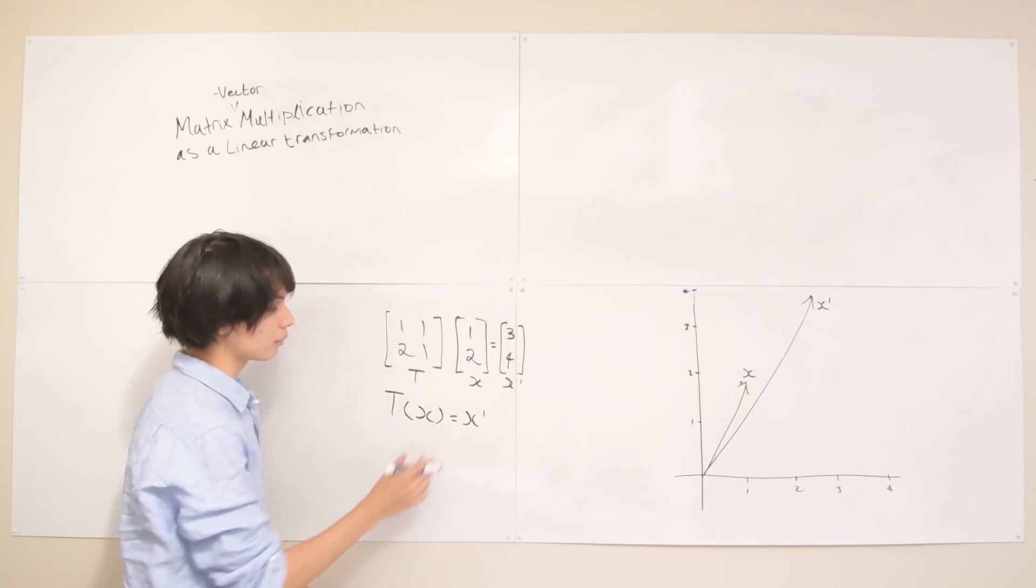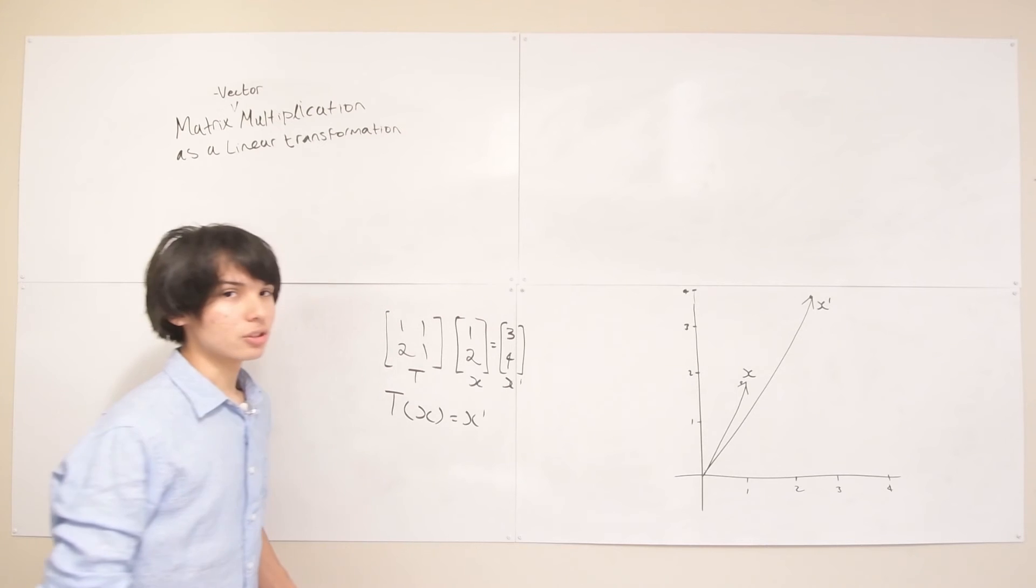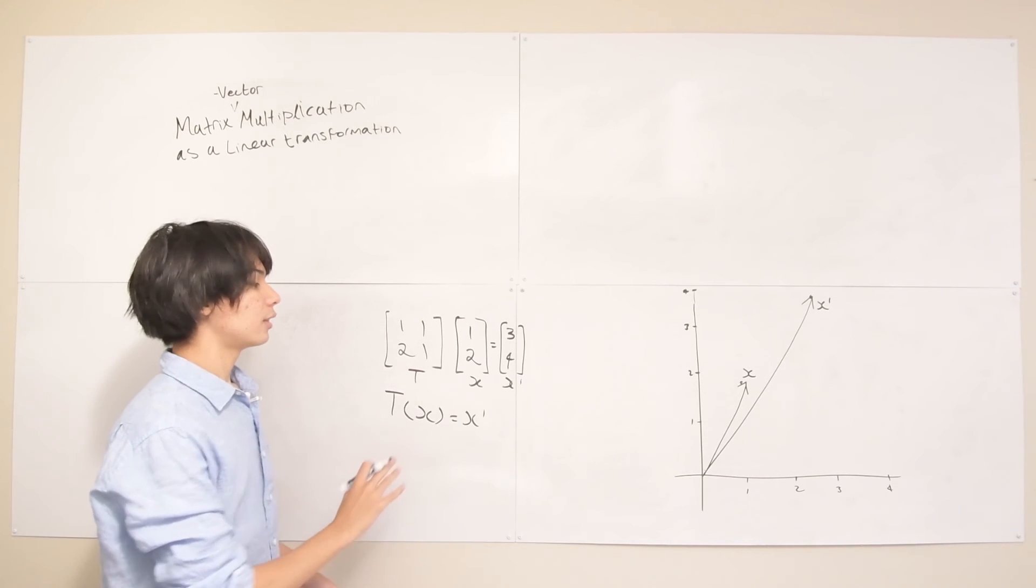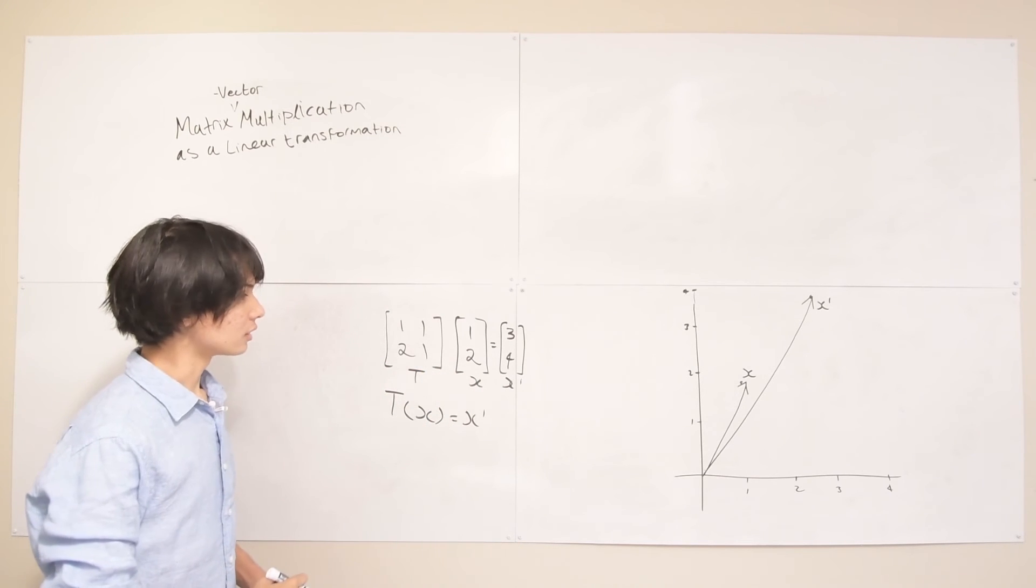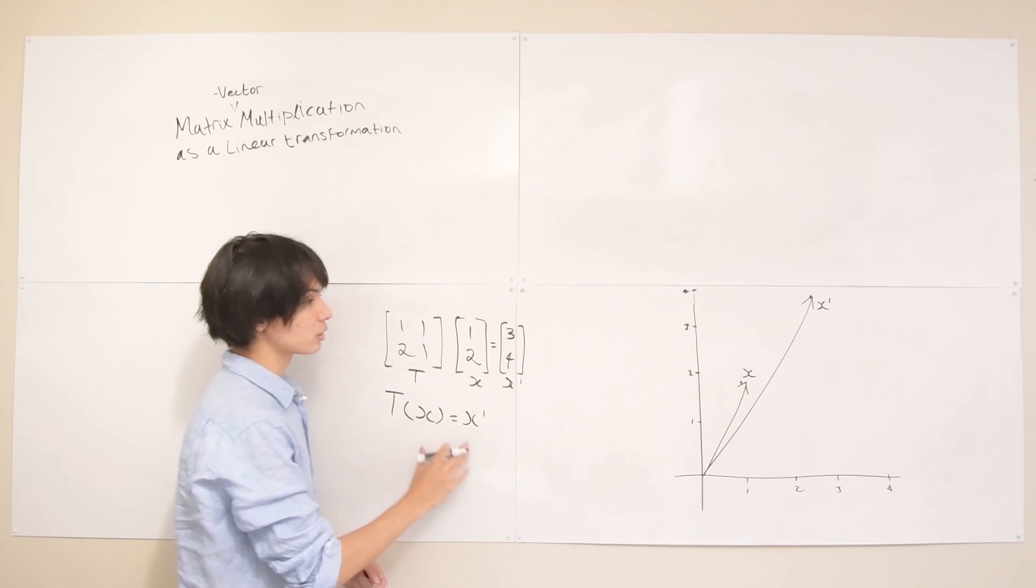This idea of thinking of matrix-vector multiplication as a linear transformation takes in some vector and puts them somewhere else in the plane, which kind of relocates them somewhere in the Cartesian space.